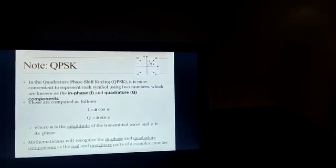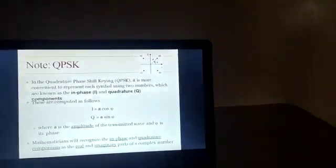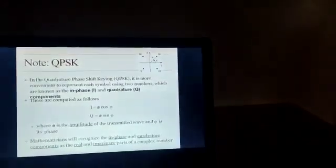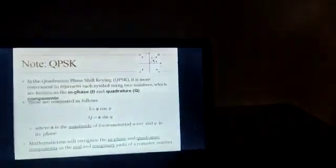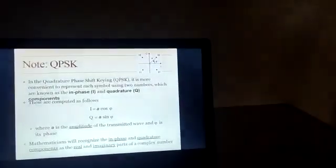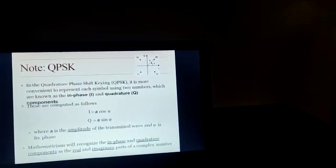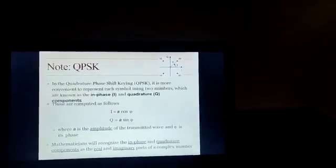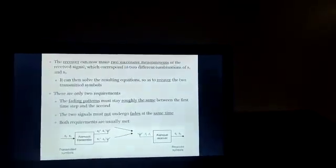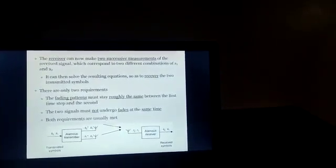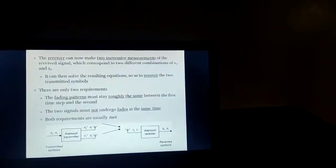In QPSK, it is more convenient to represent each symbol using two numbers known as the in-phase and quadrature components. They can be computed by I = A·cos(φ) and Q = A·sin(φ), where A is the amplitude of the transmitted wave and φ is its phase. The receiver makes two successive measurements of the received signal, corresponding to two different combinations of S1 and S2, and can then solve the resulting equations to recover the true transmitted symbols.